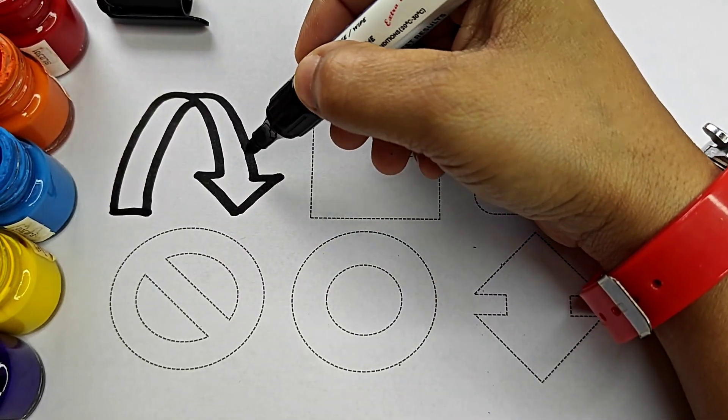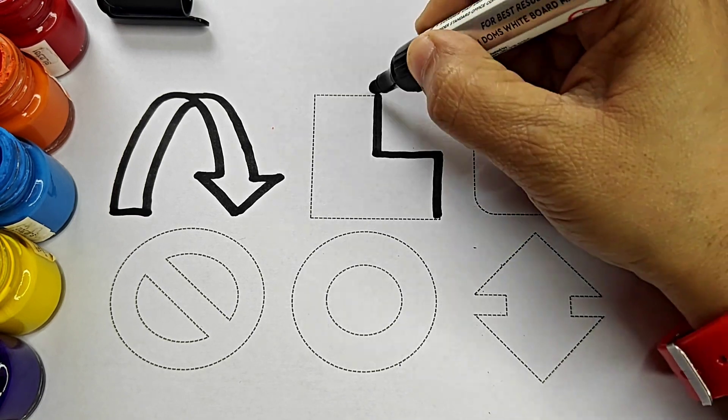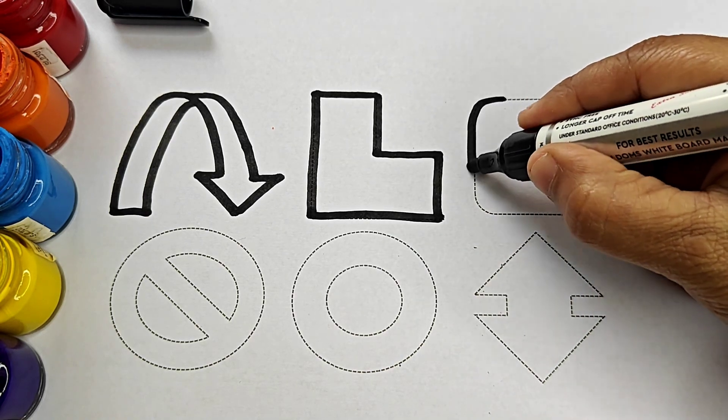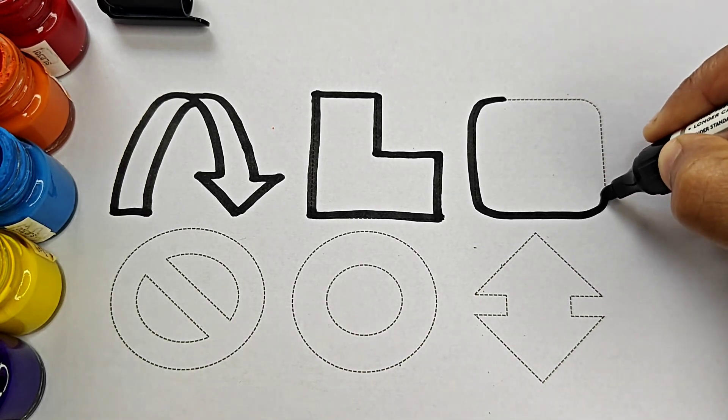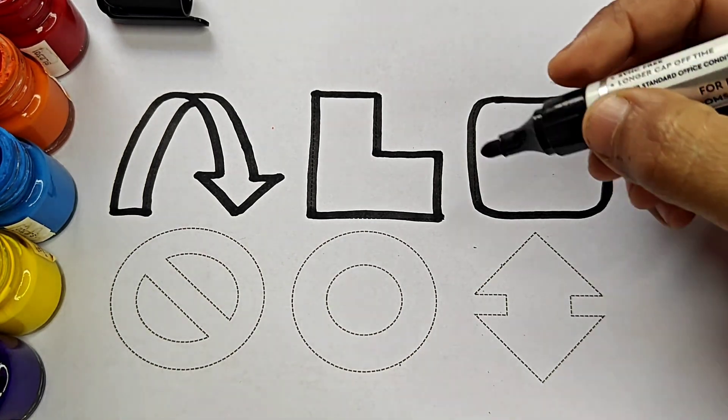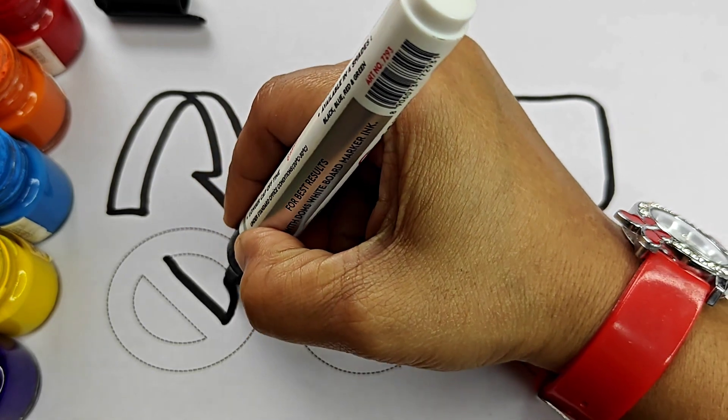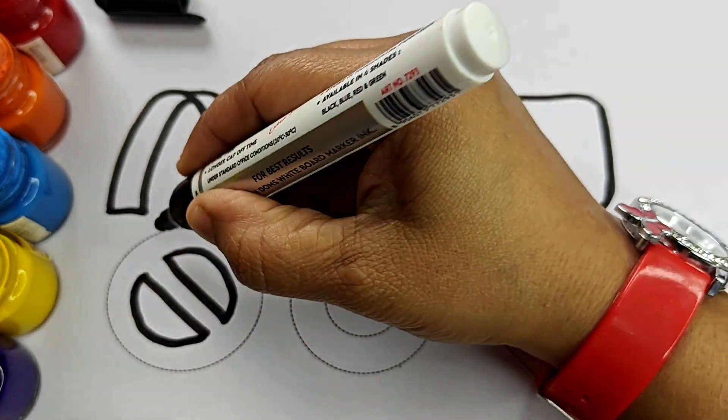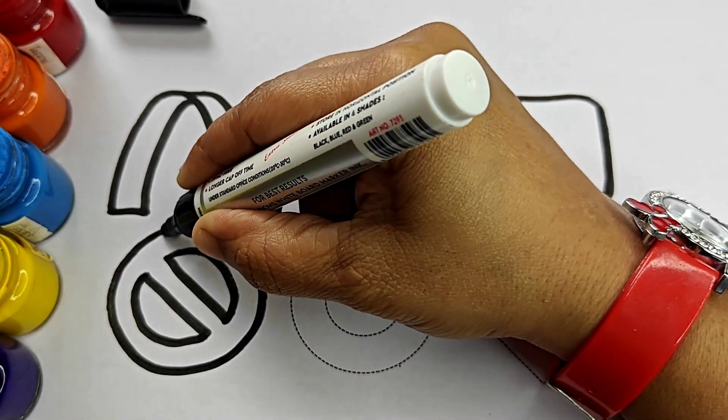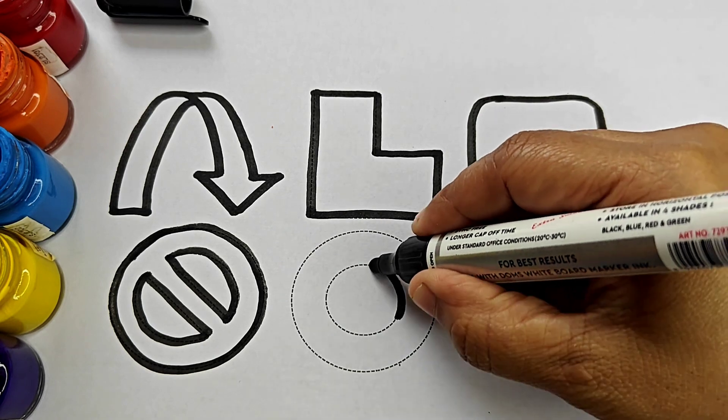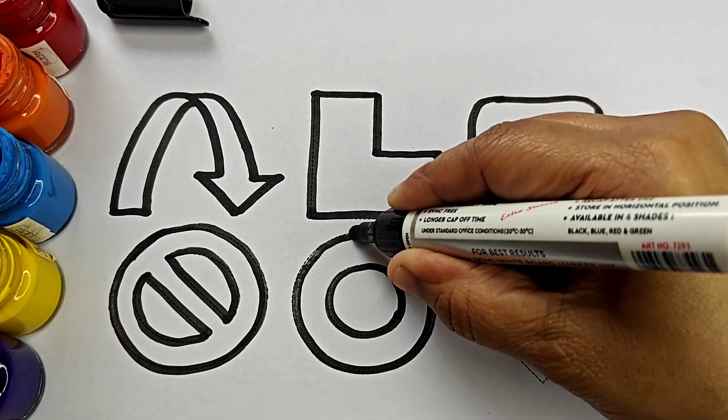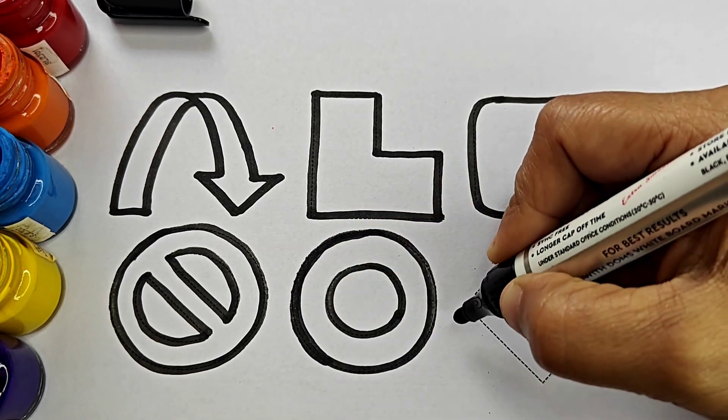Curve down arrow. L-shape. Rounded square. Not allowed symbol. Hollow circle.